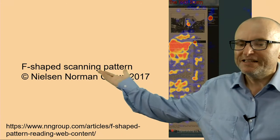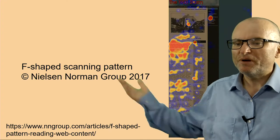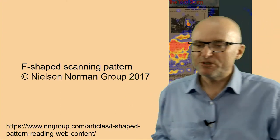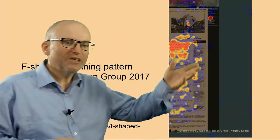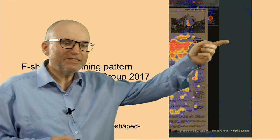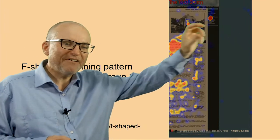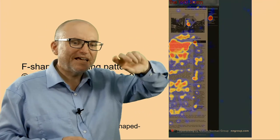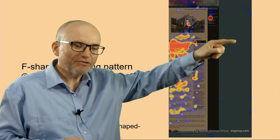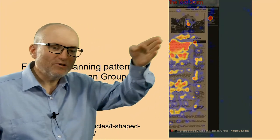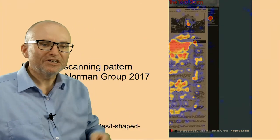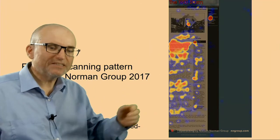They have discovered something that is often talked about — it's called the F-shaped scanning pattern, which is how people scan text. It's usually in a sort of an F shape, which means at the top they scan all the way through, and then as they go down, they simply stick to a single line on the left.